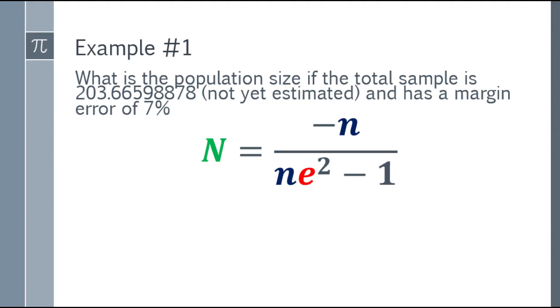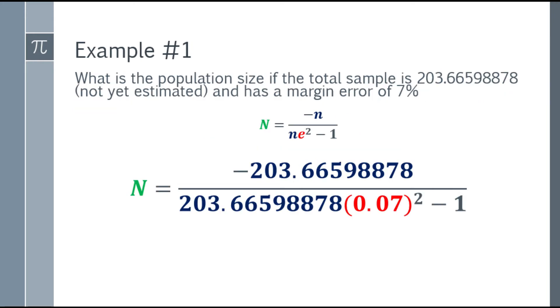Let's place the formula. After placing the formula, we can now substitute the given values. N, or the population size, equals negative 203 with its decimal over—remember, it's negative in the numerator. Over the denominator, that will be 203 and decimal times the margin of error, which is 7%, that is 0.07. Change it to decimal because it's in percent. Square it, and then minus 1.